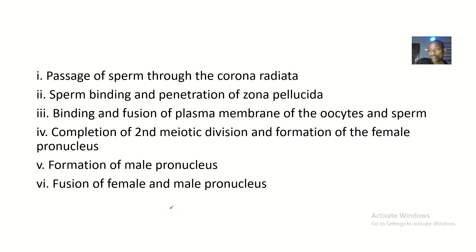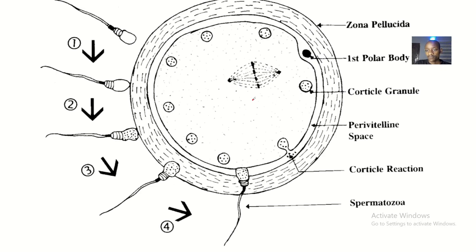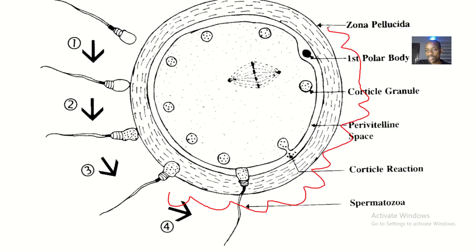Subsequently we'll be making videos on each one. So basically the first phase is the passage of sperm through the corona radiata. The corona radiata is basically like a layer surrounding the egg — not indicated in this picture, but it looks like a rock surrounding the egg. The sperm has to pass through this first.